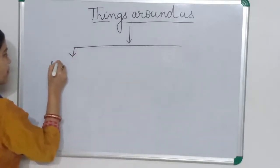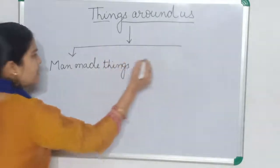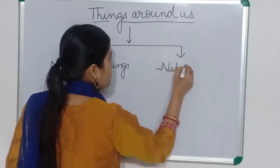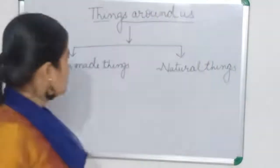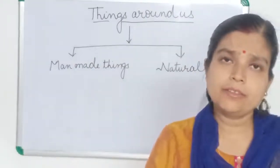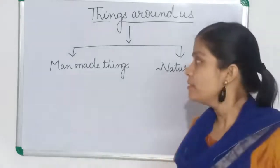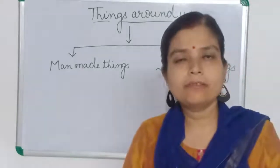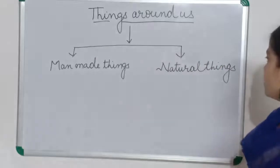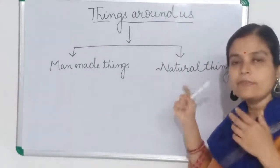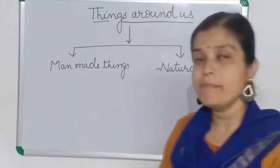We can categorize things in two ways. First, man-made things, and second, natural things. Who made your mother and father? No human beings made them. Who made the cat and dog? No human beings. Those are made by nature. Who made the mountain? We get it from nature only. So the things which are created by nature or we get from nature are known as natural things.